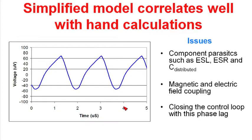There's ESLs associated with the output filter capacitors. There's ESRs. There's distributed capacitors associated with the inductors. There's also magnetic and electric field coupling that we haven't simulated yet. The current in the first output filter inductor might couple into the second stage and reduce the effectiveness of our filter. Electric field coupling can be a problem too.